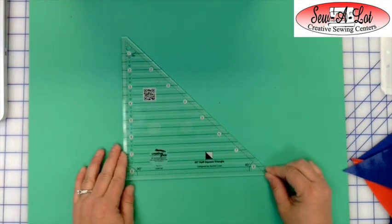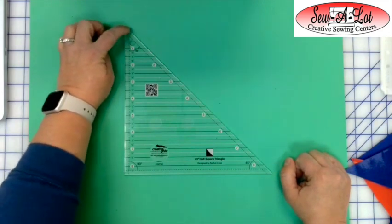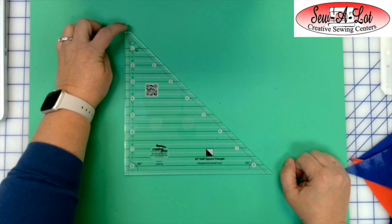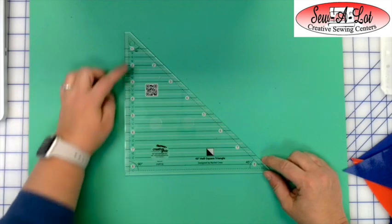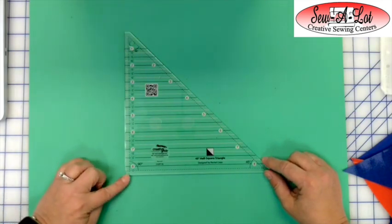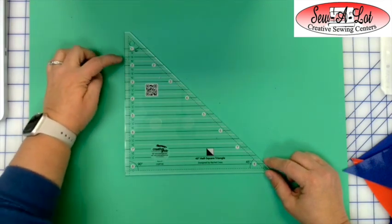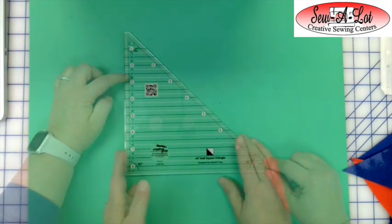The 45 degree half square triangle has a flat corner. This corner is going to be the top or the bottom of your triangle that you're cutting. It has lines that go down from that flat edge. It goes down to eight and a half inches, and it's marked every inch, every half inch, and then it's marked with a white line every quarter inch.